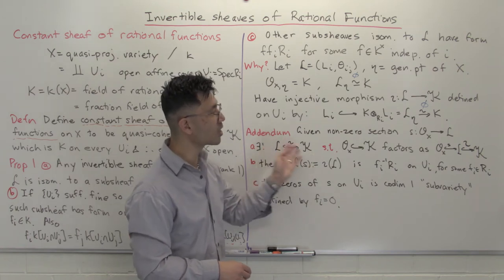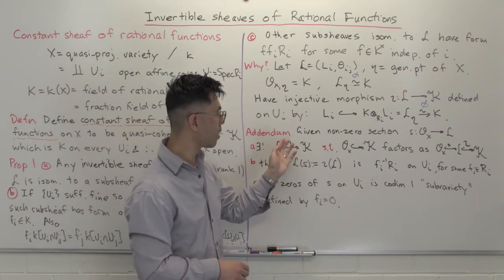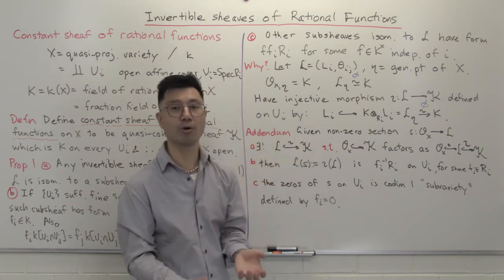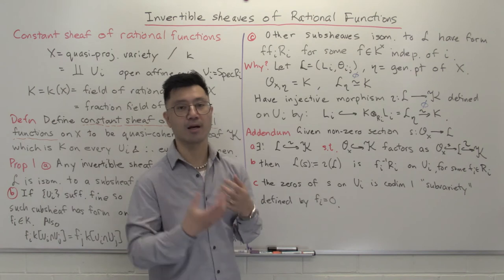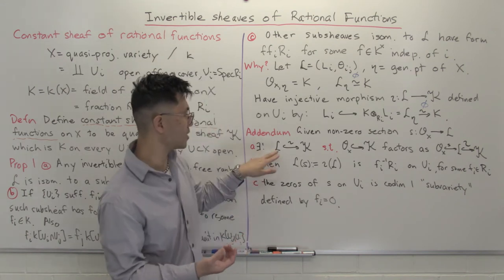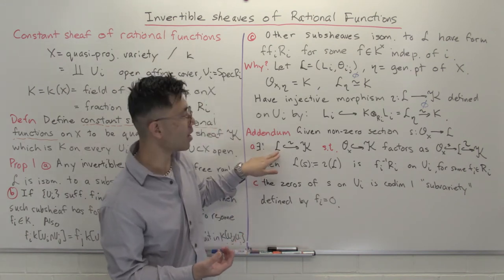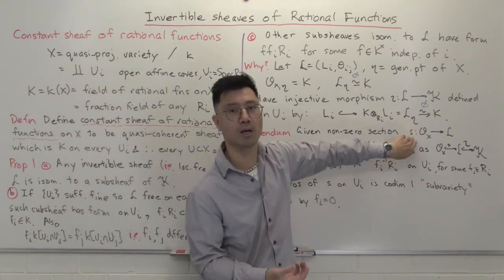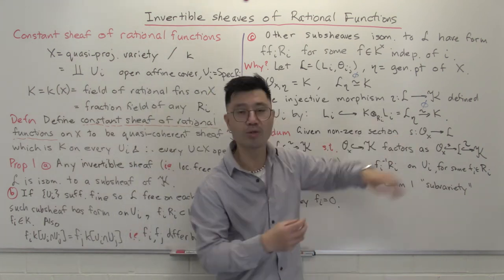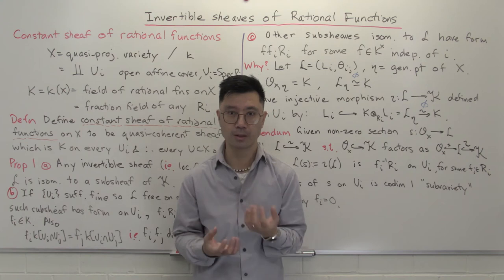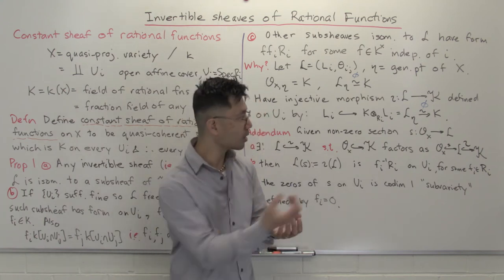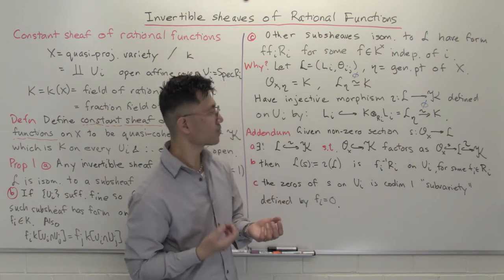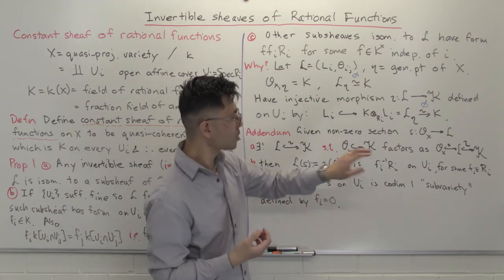Since there's a unique map ι from L to K, taking its image gives the natural sub-sheaf of K associated to L. That's rather nice — you can fix the sub-sheaf by just picking a section. And remember, sections are one of the reasons why we study line bundles: they're the things which allow us to create morphisms into projective space.